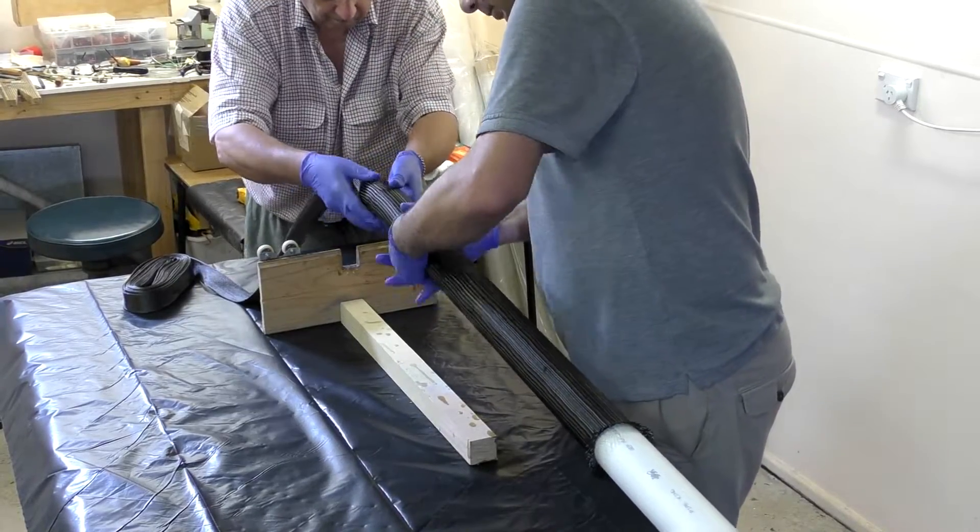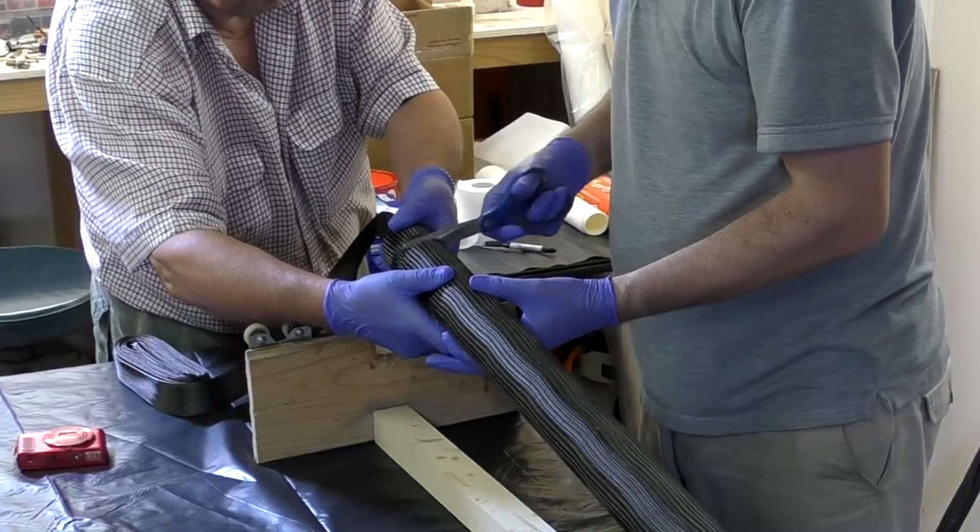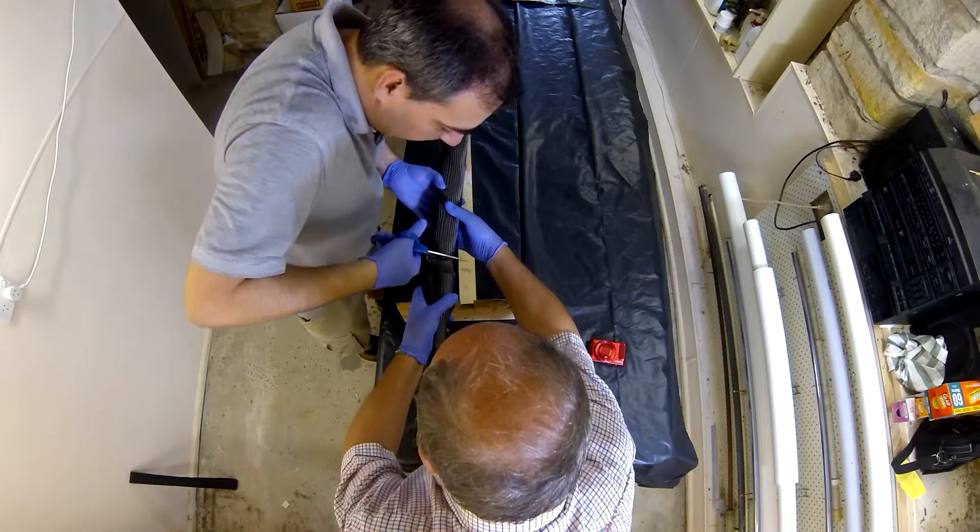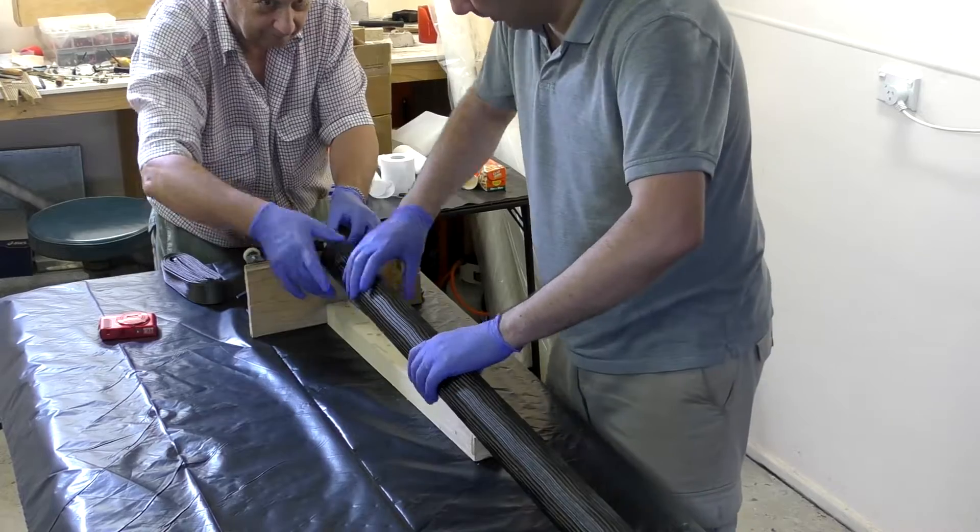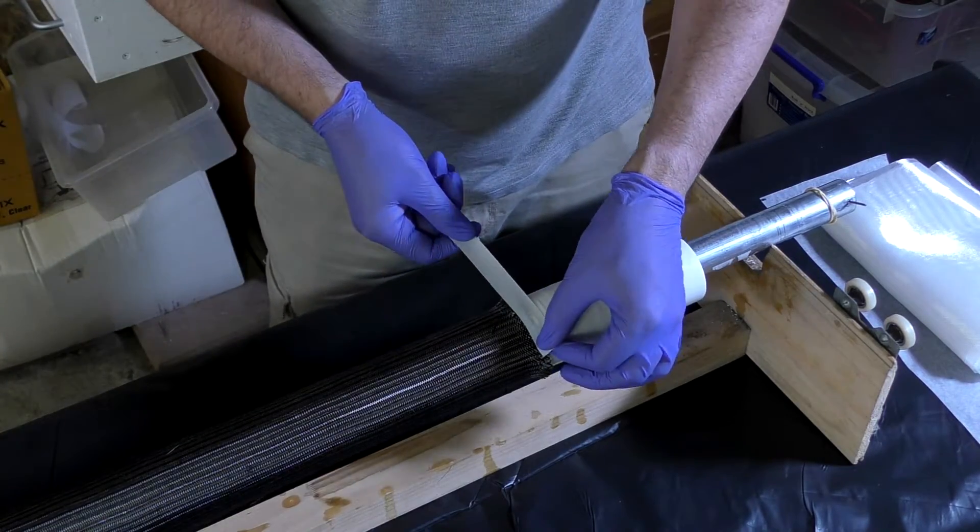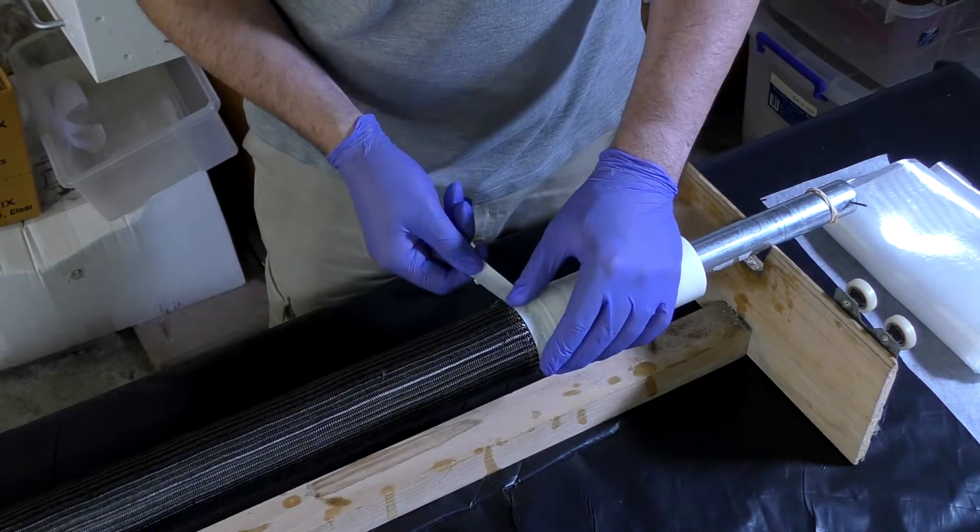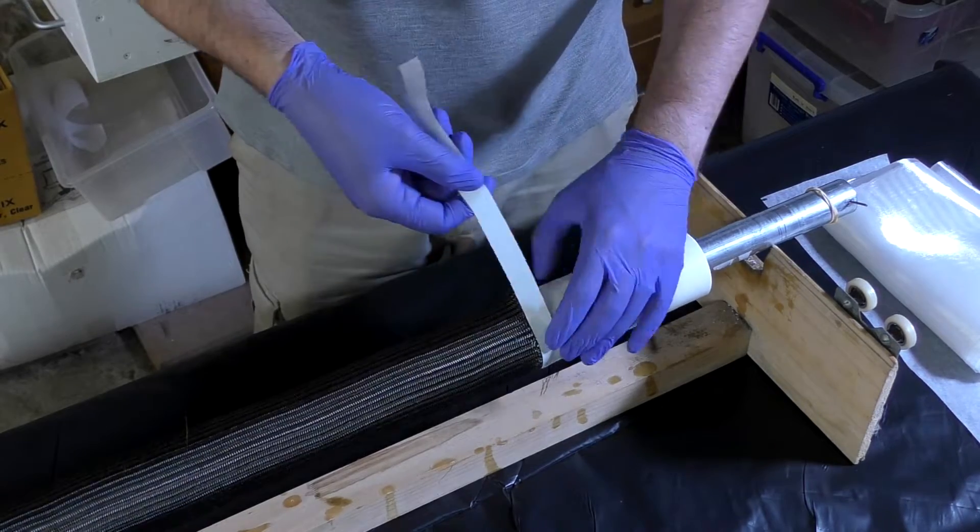Once it is on the mandrel, we cut it to length. Then we tape only one end of it down. This allows the rest of the sleeve to flex, which makes it easier to work the epoxy into it.